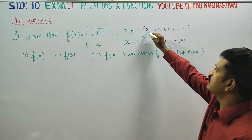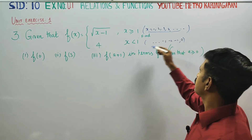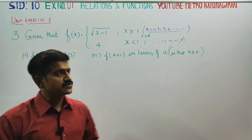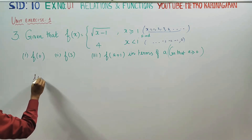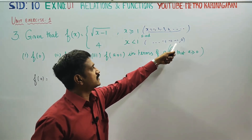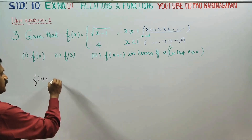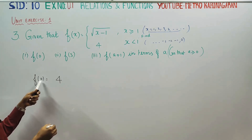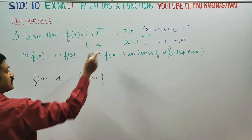This is the function defined as root of x minus 1, which has the formula x minus 1. F of 0: since 0 is not in the area where x is greater than or equal to 1 — because 0 is less than 1 — the formula is not used.